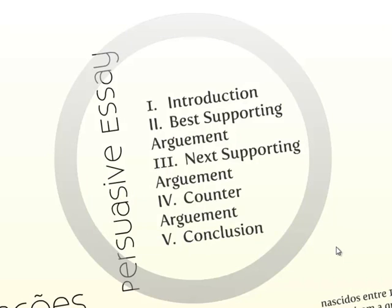To quickly recap the persuasive essay: your first section is your introduction, your second section is your best supporting argument, your third section is the next supporting argument, your fourth section is the other side's counter-argument where you dispel their argument, and your fifth section is your conclusion.